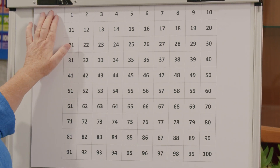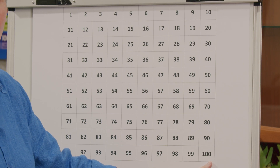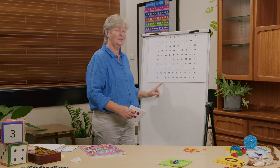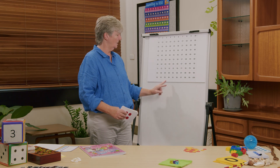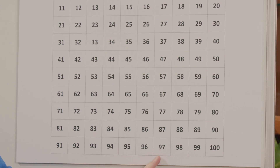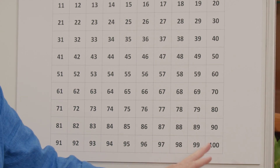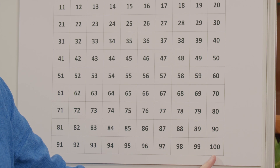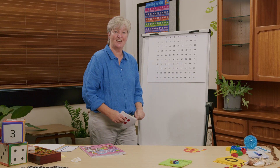Last week, we talked about there being a zero before one. And we know after 100, of course, there's more numbers. And the pattern repeats: 101, 102, 103, 104, 105, 106, 107, 108, 109. What happens next? 110. That's the tricky one, isn't it? 110. And we'll talk more about that in the next few weeks.